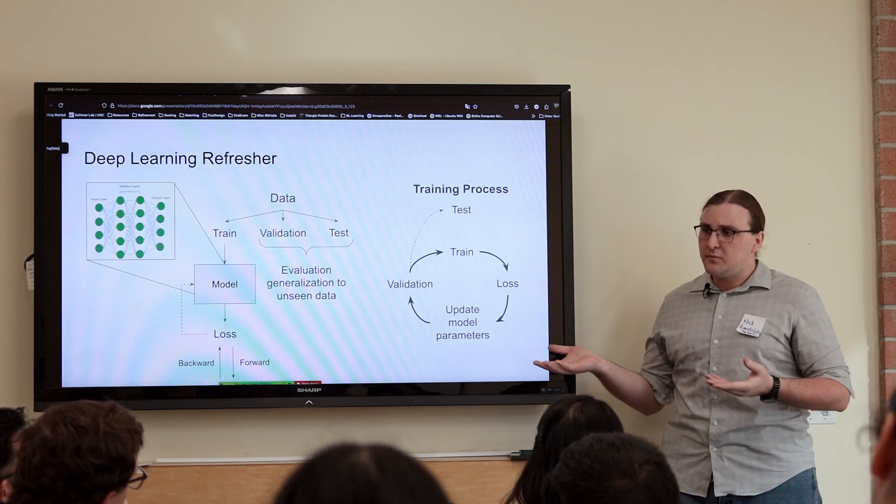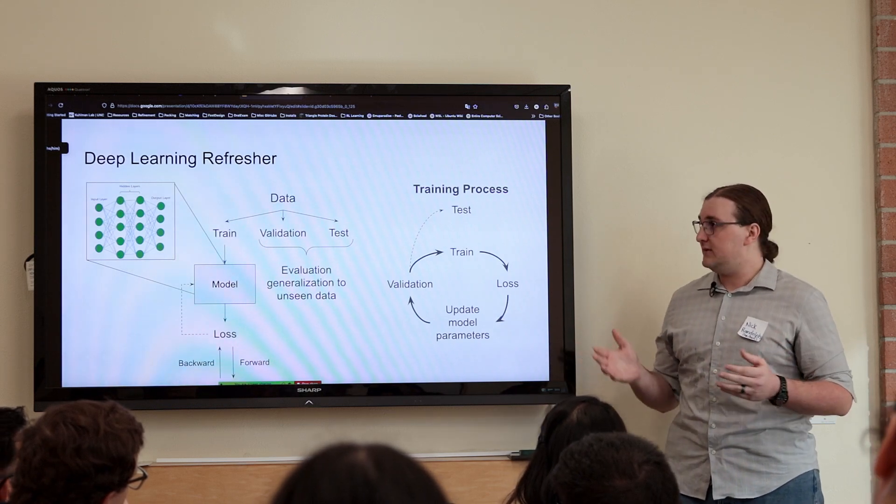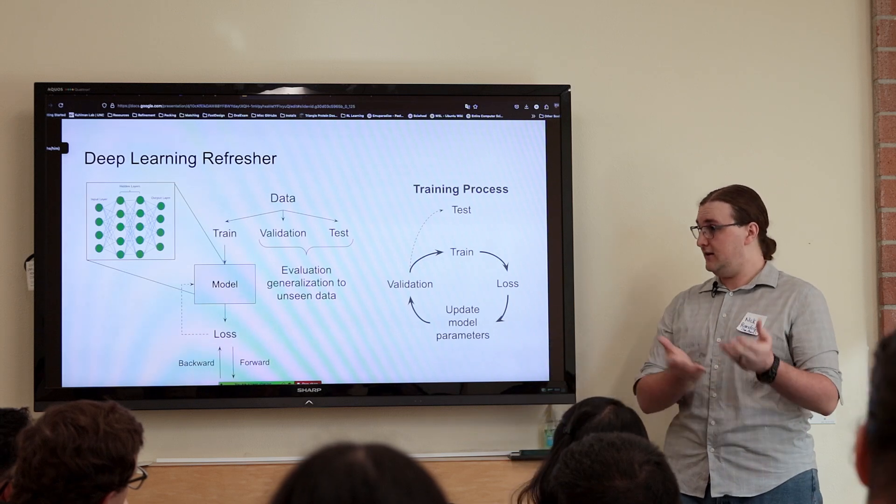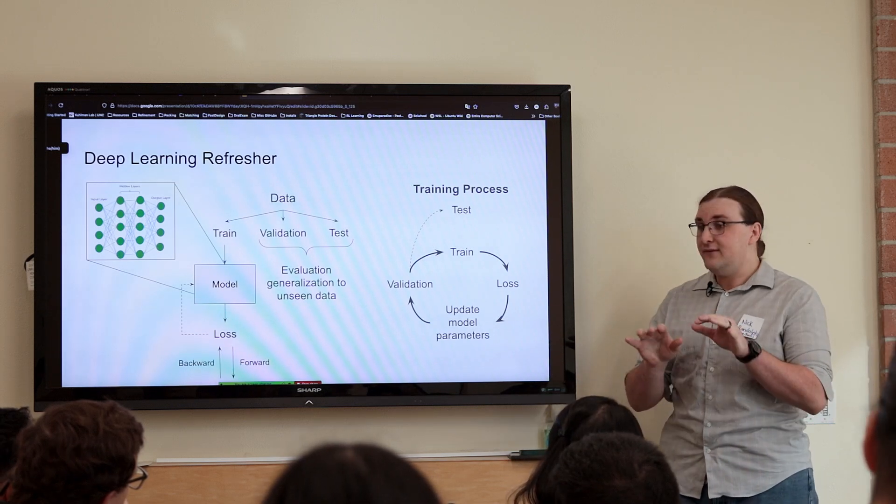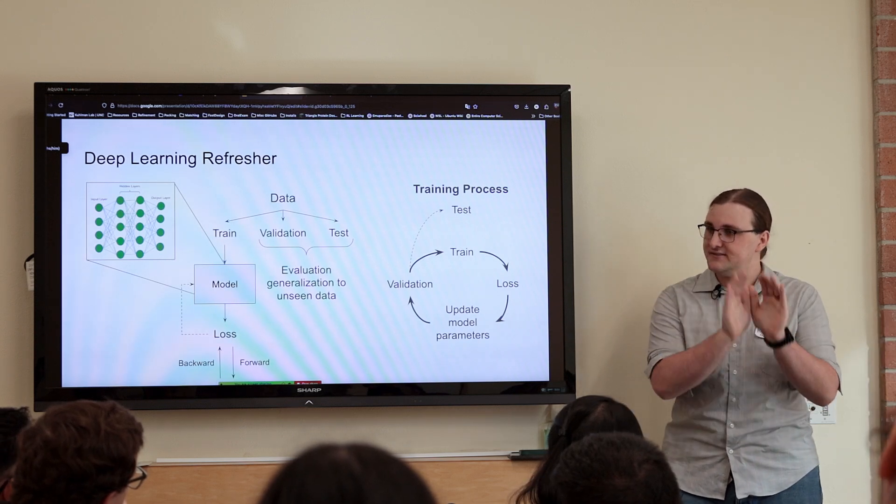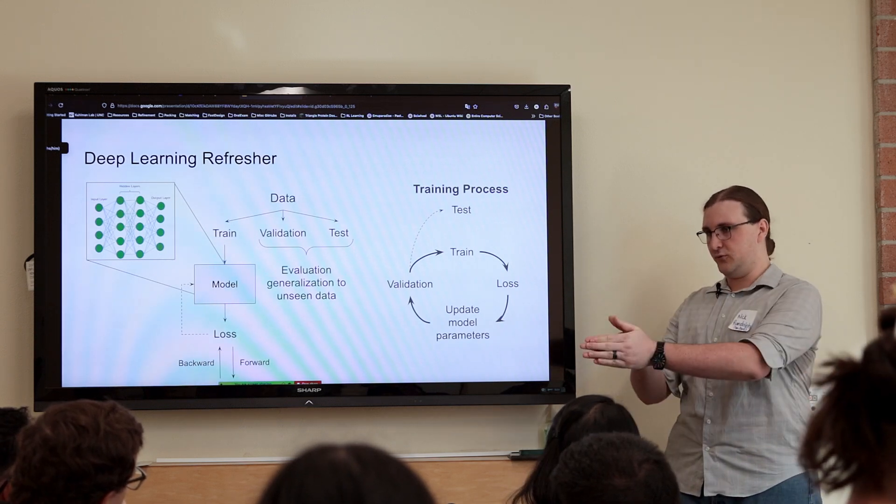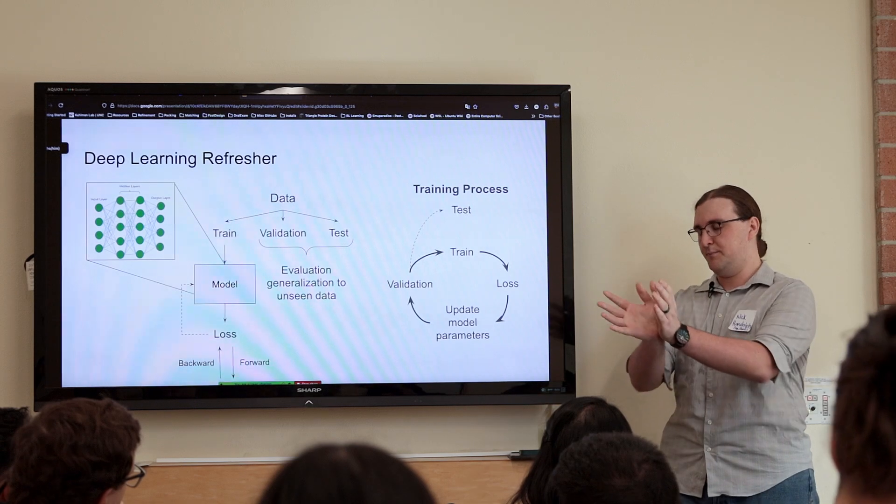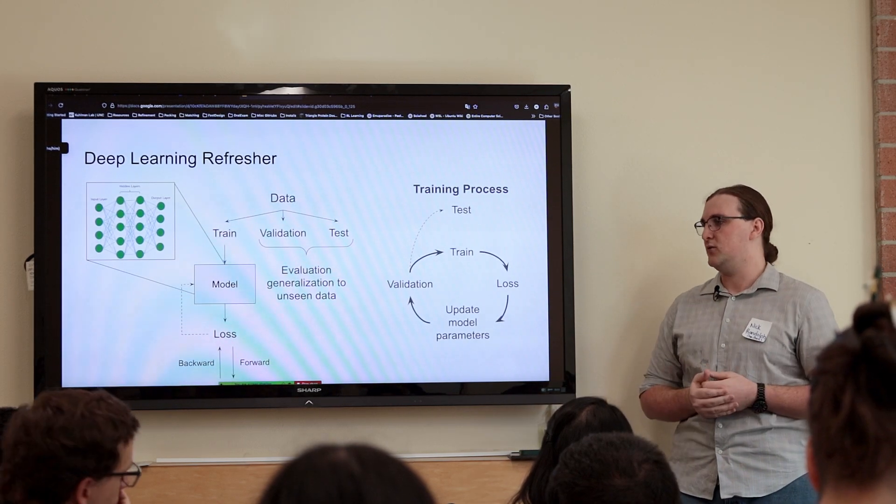Usually the bigger one's probably better, but not always. Maybe it's overfitting more to the training set and less to the validation set. So that gives you a way to separate into those different model architectures. And then once you've selected your final model, you throw that through the test set, so you can actually publish that and release it as a comparative.